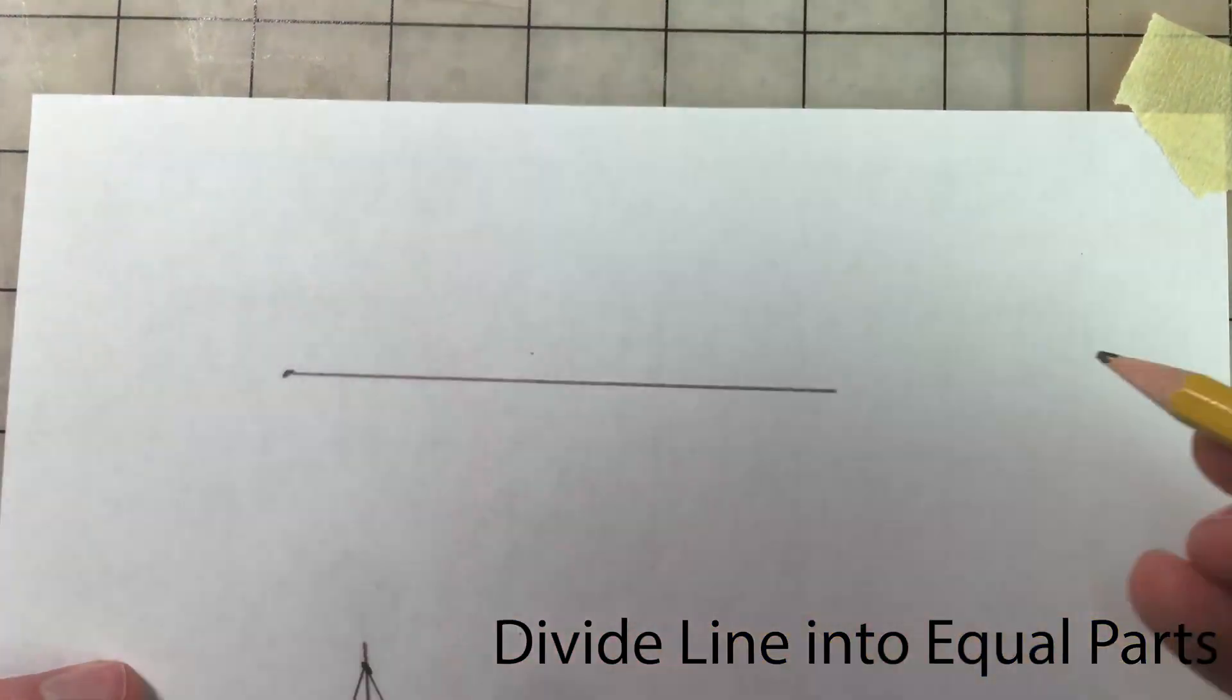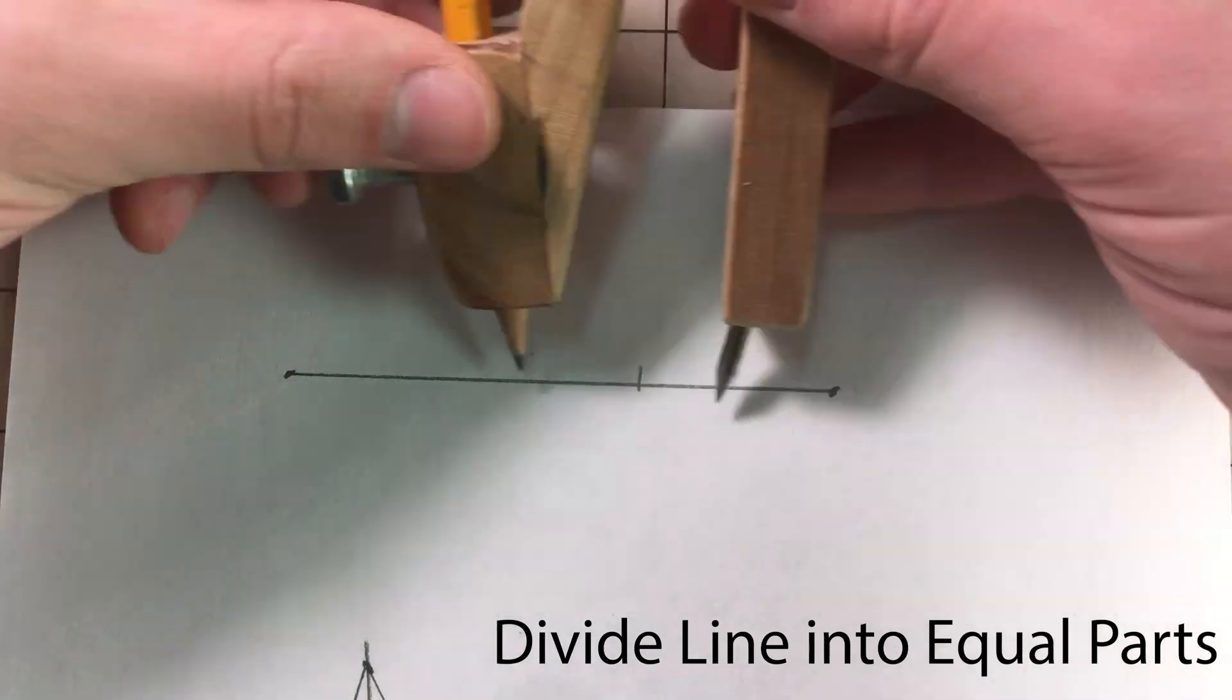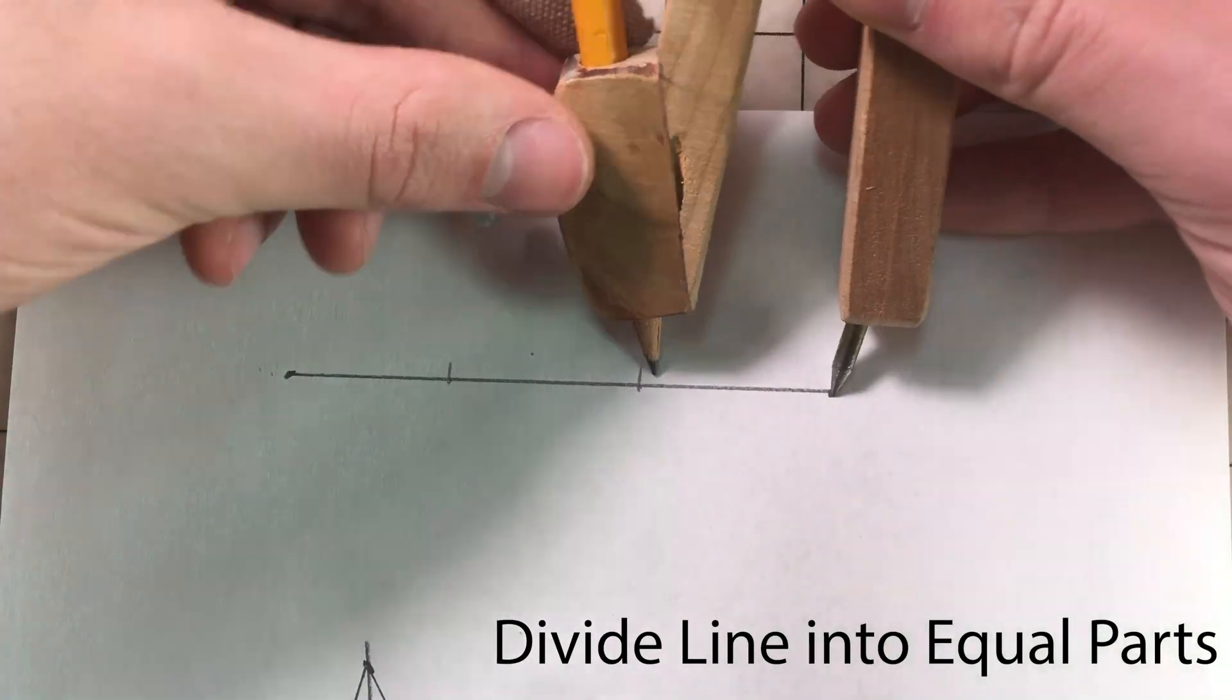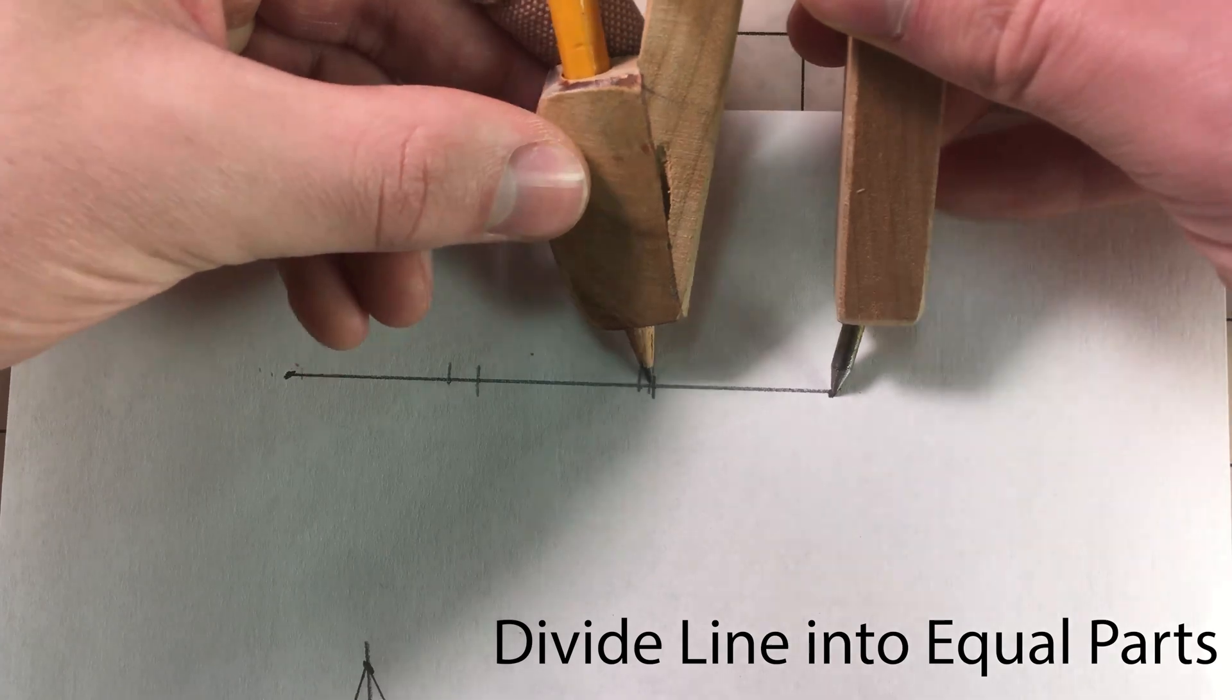To divide a line evenly, the easiest way is by trial and error. Keep adjusting the compass width until it fits end to end as many times as you need to between your two points.